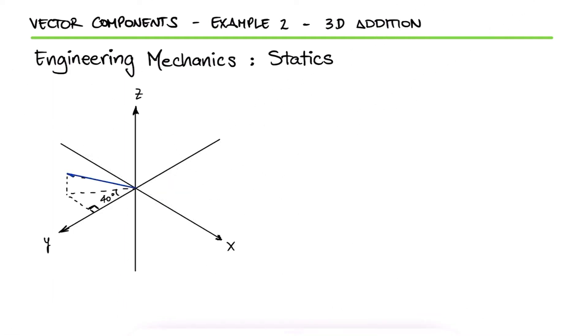If the two forces F1 and F2 are added together, what is the magnitude and direction angles of the resultant force R? This is the second example for the vector components main video. The link to that video and other examples are in the description below.